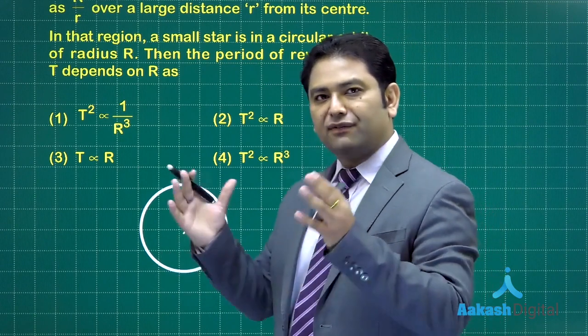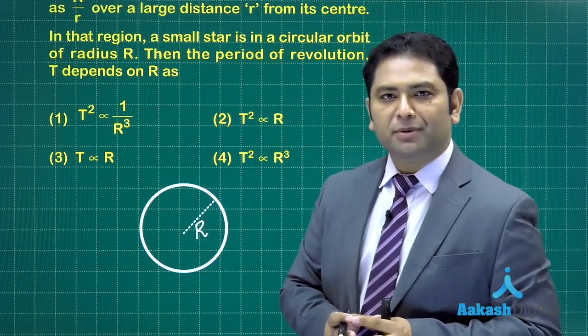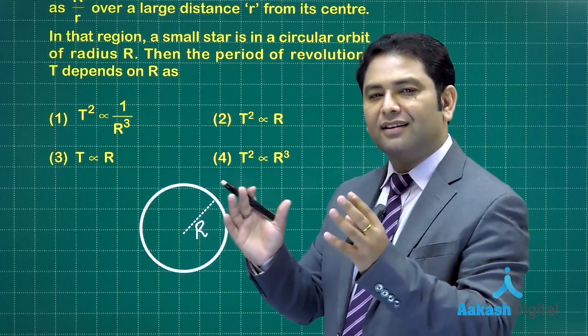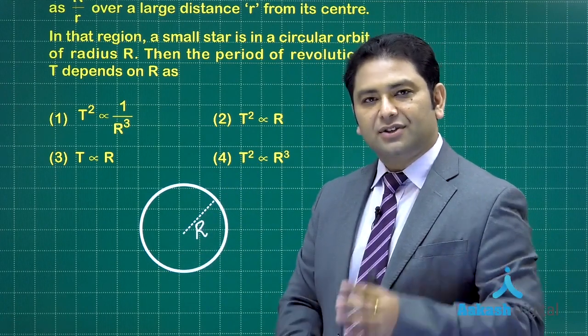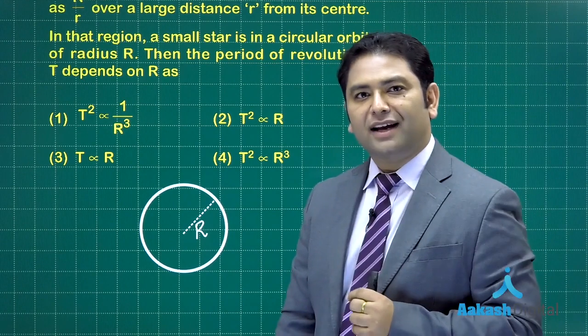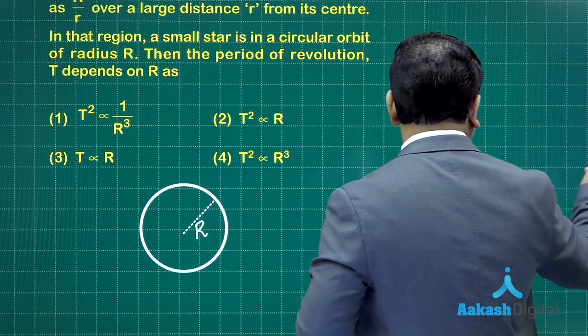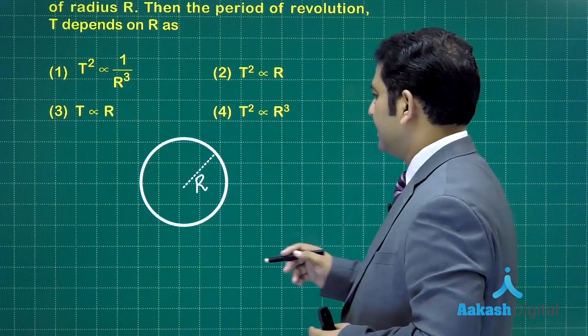So here that is capital R. Now you know the galaxy is something like a continuous mass distribution, but effectively the centripetal force would be provided only by the mass which is enclosed within this radius. So the prime thing that we need to find is what is the mass of this enclosed portion.